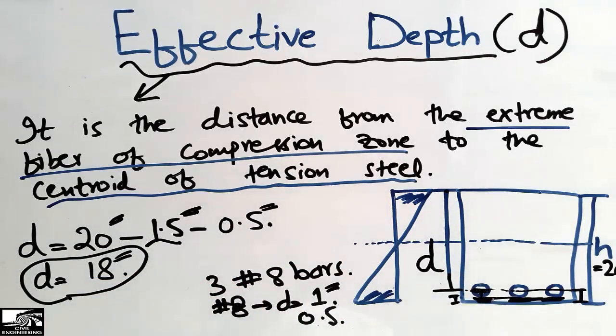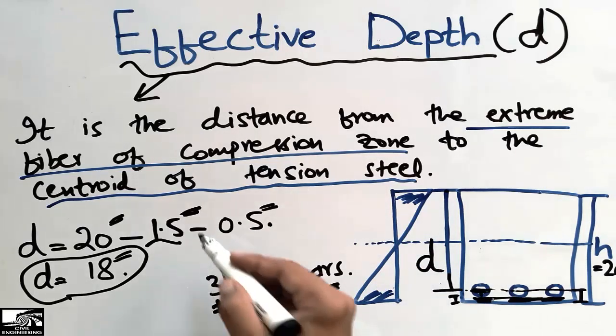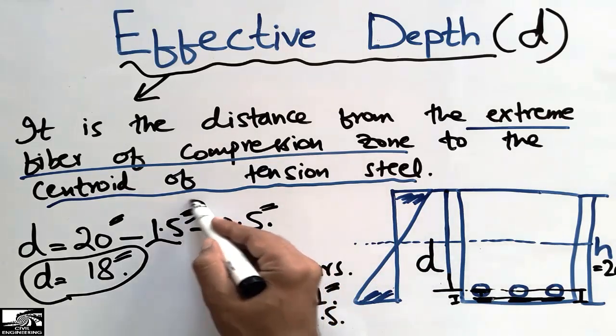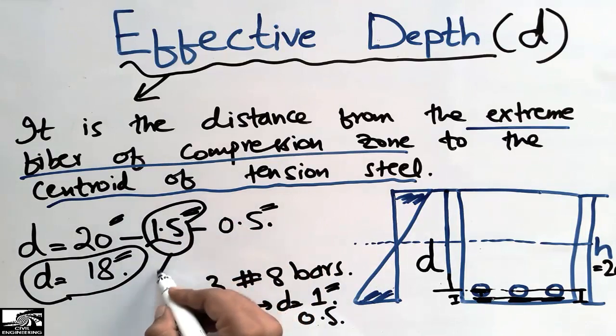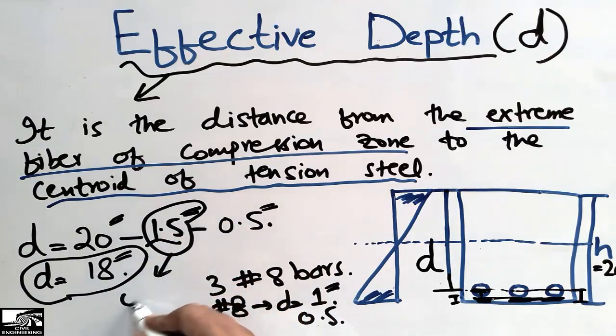We can also find the effective depth of a slab in a similar way. For slabs, the clear cover used is 0.75 inches.